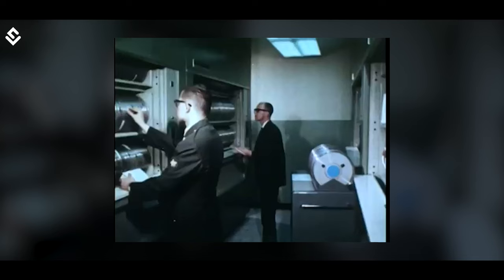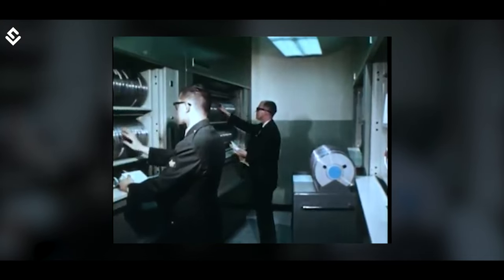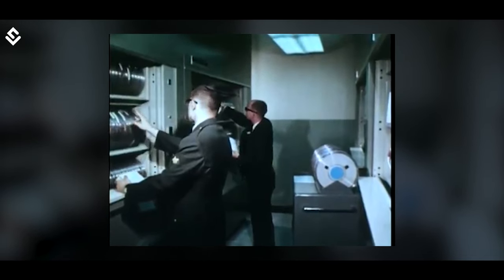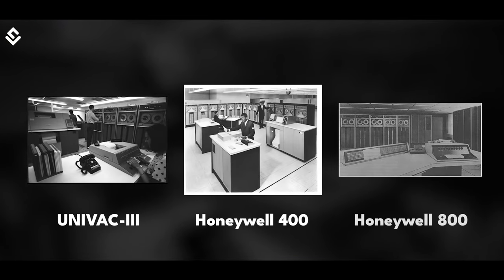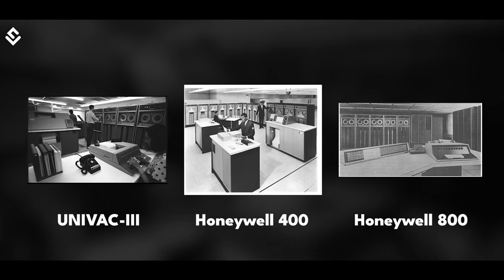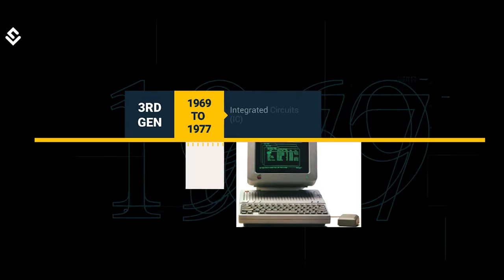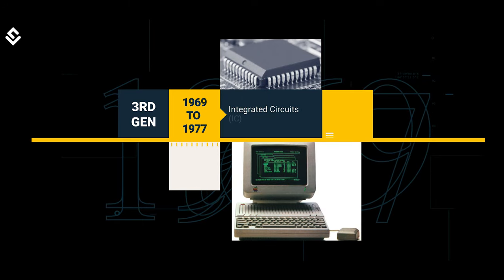They were also smaller and less expensive, and used magnetic tape for storage. UNIVAC 3, Honeywell 400 and 800 were some popular new additions in the second generation.